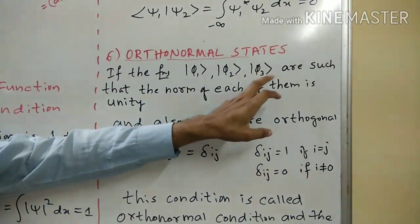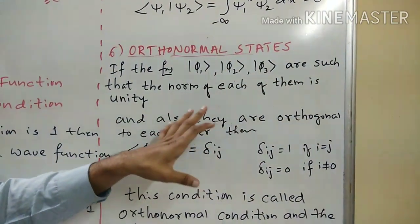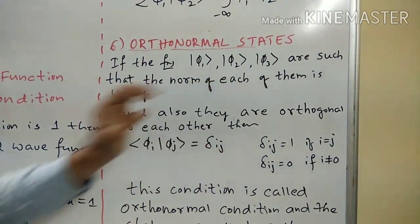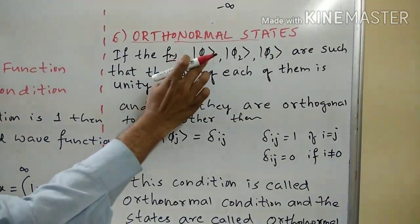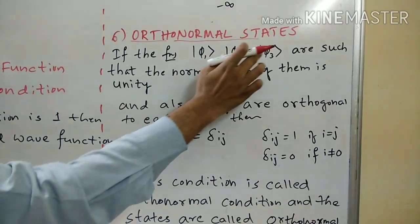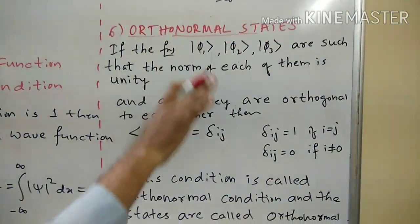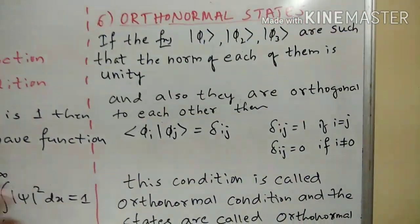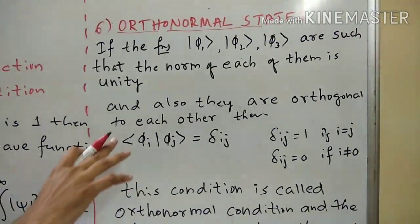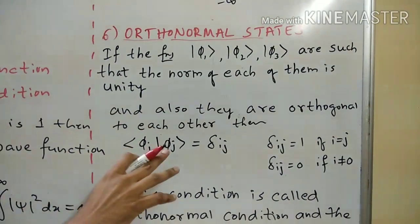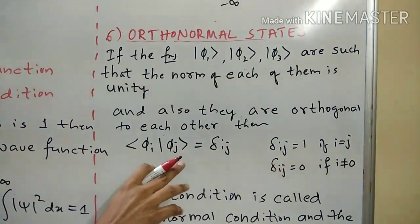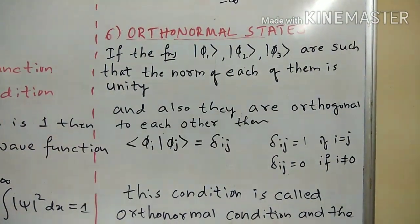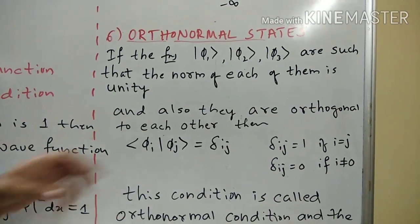Next are orthonormal states. Suppose we have states psi1, psi2, psi3 such that the norm of each of them is unity — that is, psi1, psi2, psi3 are normalized — and they are also orthogonal to each other.